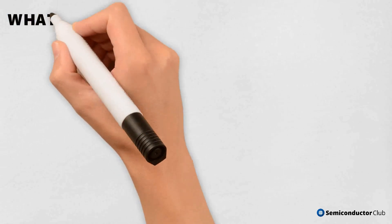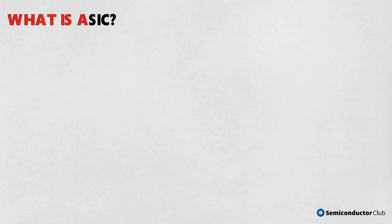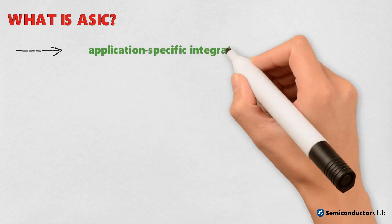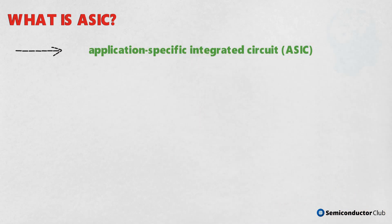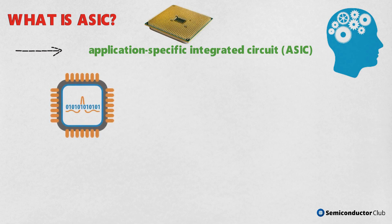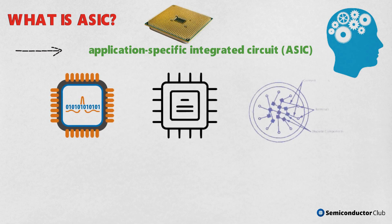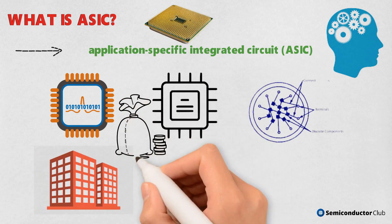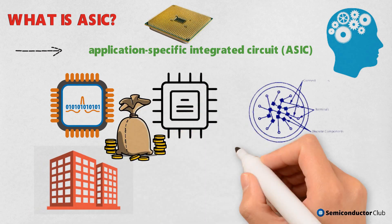Let's start with an application-specific integrated circuit, ASIC. As the name suggests, this is a device that is created with a specific purpose in mind. Any chip that is custom-made is an ASIC, irrespective of whether it is analog, digital, or a mix of both. ASICs are typically designed and used by a single company in a specific system.